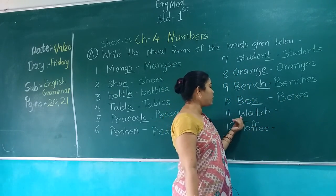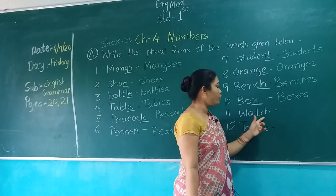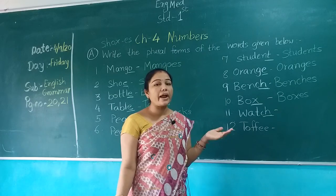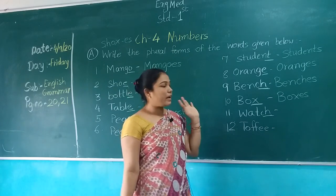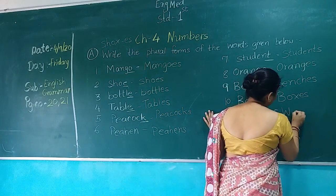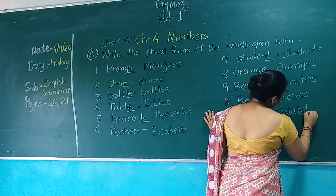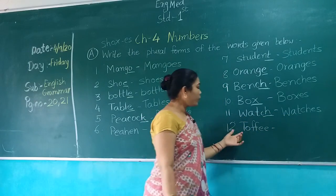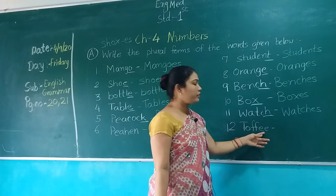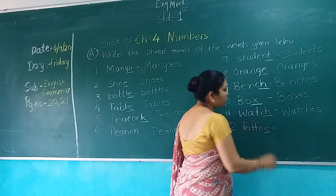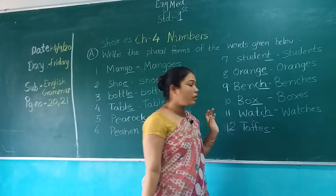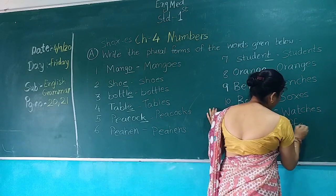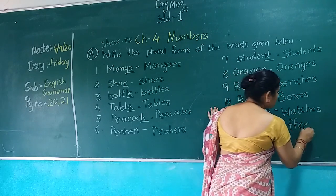W-A-T-C-H, Watch. Last letter is H, so we add ES: W-A-T-C-H-E-S, Watches. T-O-F-F-E-E, Toffee. Last letter is E, so we add only S: T-O-F-F-E-E-S, Toffees.